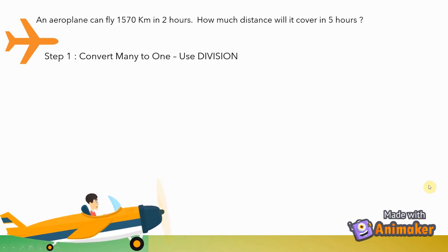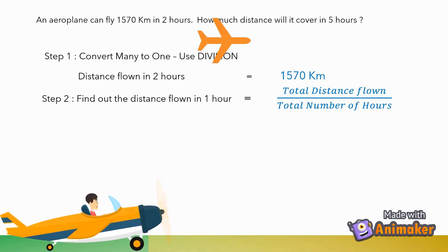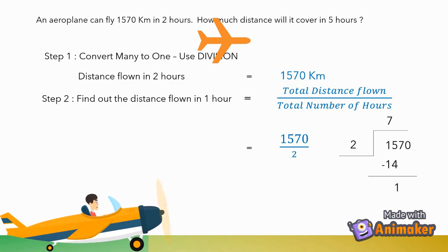Again, we will convert many to one using division. The distance flown in 1 hour is total distance flown divided by the total number of hours. So, 1570 divided by 2. We will write it like this: first, we will divide 15 by 2. We need a number divisible by 2 that is less than or equal to 15.